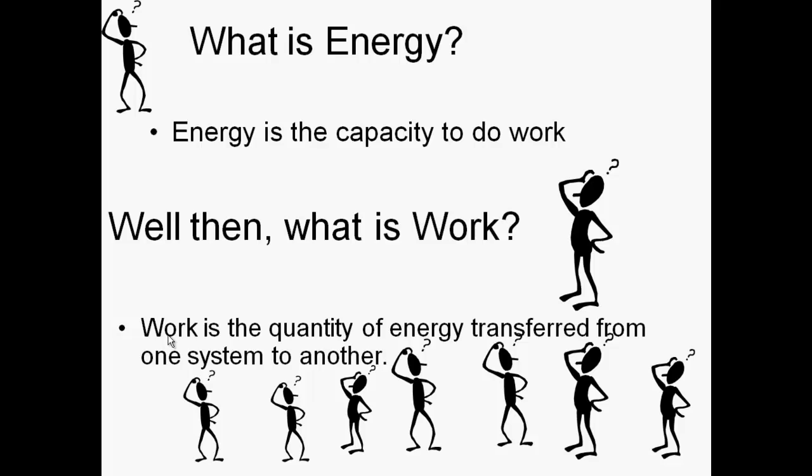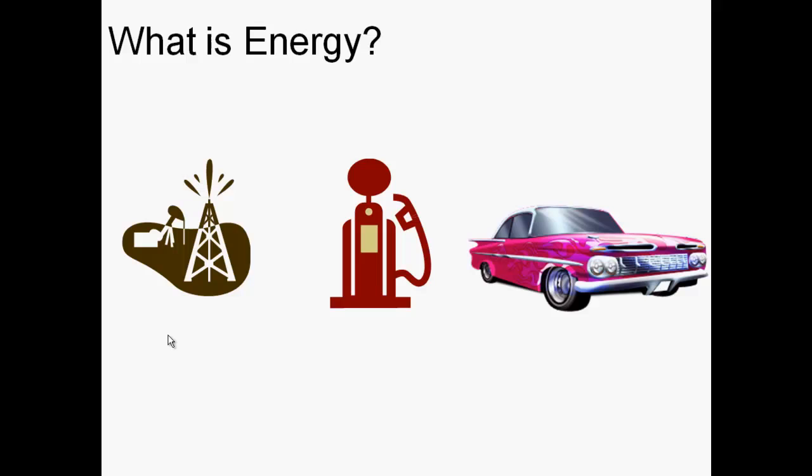Most of us have a pretty good intuitive understanding of what energy is. For example, we know that energy is in oil that we pump out of the ground, we can refine it, put it into our car, and the car is then able to drive. Energy is about stuff that can be converted from one form to another. The energy in the oil starts as chemical bonds, gets refined into more chemical energy, is burned in the car creating heat energy, which moves the pistons — converting heat energy into mechanical energy — and that mechanical energy drives the rotating tires.